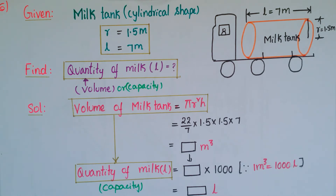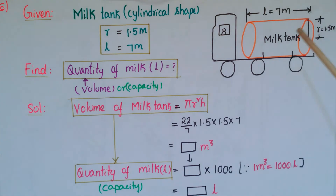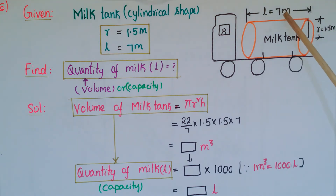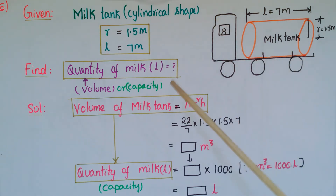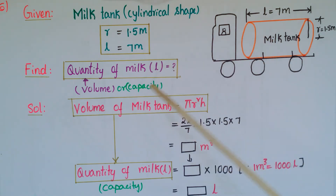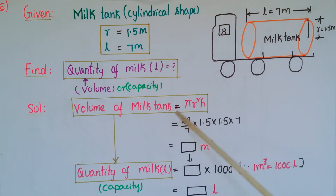This is problem six from exercise 11.4 of NCERT. This is an application problem based on volume and capacity. The given values are: the milk tank radius is 1.5 meters and the length of the milk tank is 7 meters. We have to find the quantity of milk that can be stored in this tank in liters, which means we need the capacity of the tank, which is the volume of the milk tank.